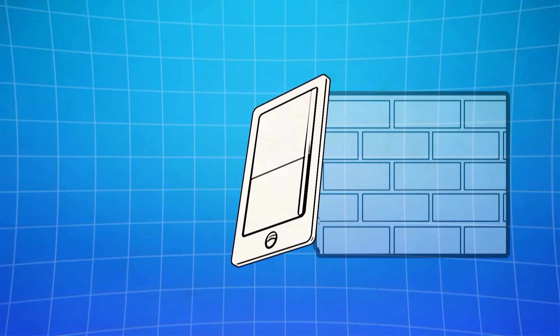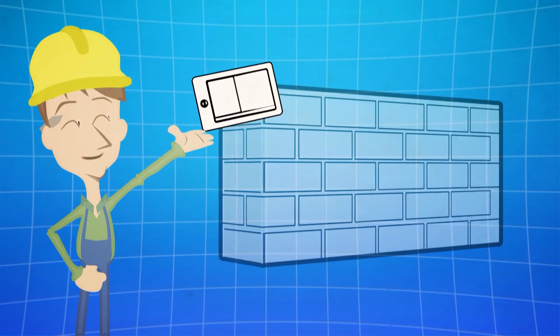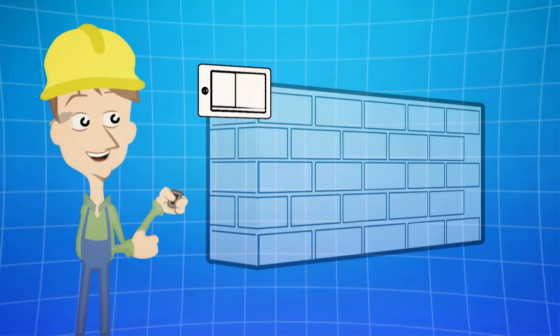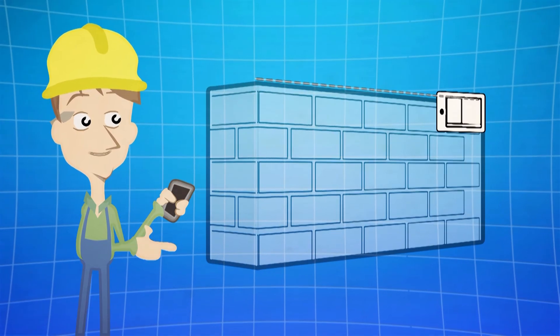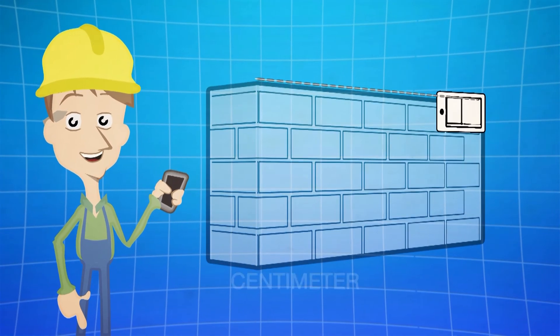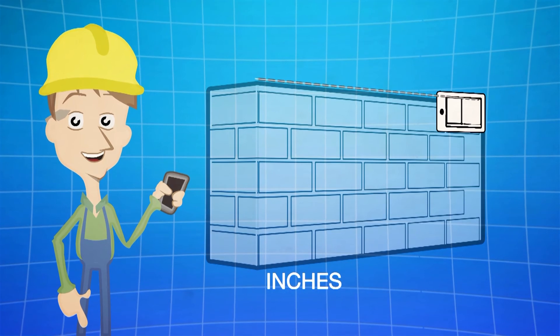Place the phone at the beginning of the distance to measure. Press Start and then move it towards the other end. When you let go of the button, you'll get the measurement in centimeters, meters, as well as inches and feet.